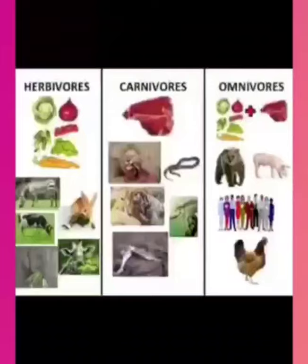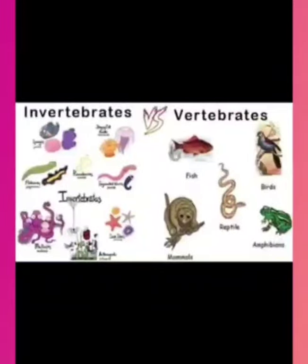For example, snake, tiger, etc. Omnivorous animals are those animals that eat both plant parts and the flesh of other animals. For example, dogs, humans, etc. We all know that some animals have a simple structure while others show a complicated structure.